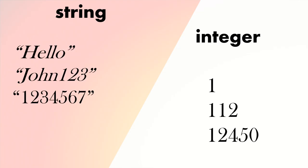On the left we've got strings — these are text. We've got 'hello', 'John', '1 2 3', '1 2 3 4 5 6' — these are in quotes, they're text. On the right there are numbers — integers. We've got 1, 11, 12, 1 2 4 5 0 — these are numbers. So what does this mean?